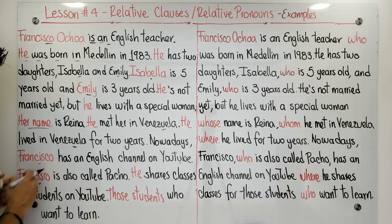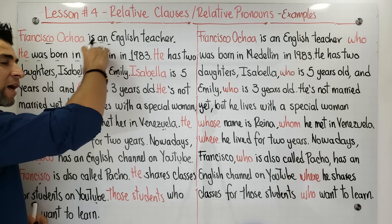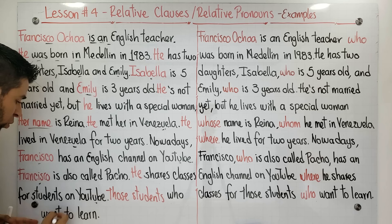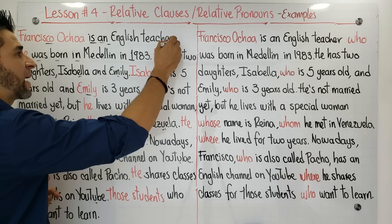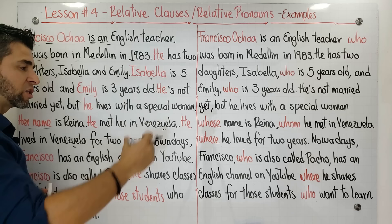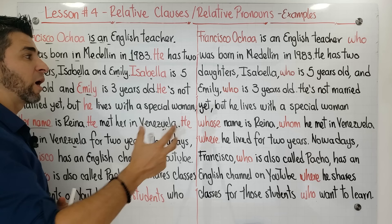'Nowadays, Francisco has an English channel on YouTube.' I'm repeating the subject Francisco, and then Francisco is also called Paco. 'He shares classes for students on YouTube' — I'm repeating YouTube. 'Those students who want to learn' — I'm also repeating students. This is a good way to tell a story, but it's not the best, because there are a lot of pauses and repetitions that affect fluency when speaking.